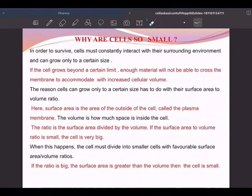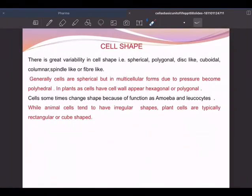Why are cells so small? In order to survive, cells must constantly interact with their surrounding environment and can grow only to a certain size. If the cell grows beyond a certain limit, enough material will not be able to cross the membrane to accommodate with increased cell volume. If the cell size increases, the required material should be there, and that material cannot pass through it. That is the reason why cells have to be small.